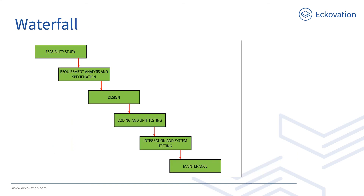Lastly, waterfall. The waterfall model is a method in the SDLC — software development life cycle — framework, which is a sequential design process in which progress is seen as flowing steadily downwards, like a waterfall. It moves through different phases: feasibility study, requirements analysis and specification, design, coding and unit testing, integration and system testing, and finally maintenance. In a waterfall model each phase must be completed before the next phase can begin, and there is no overlapping in the phases.